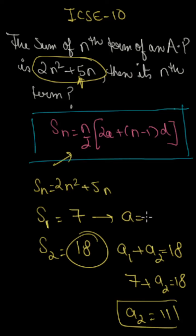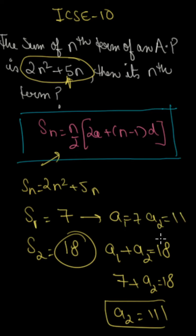So the first term is 7, and the second term is 11. So now we can find d. The common difference d is second term minus first, so d is 11 minus 7, which is 4.